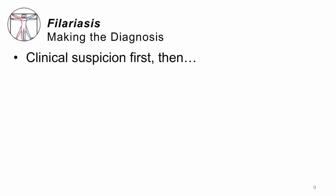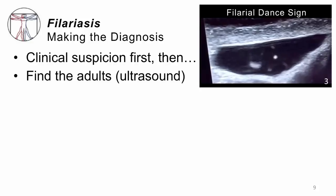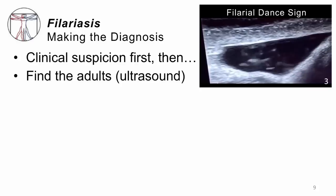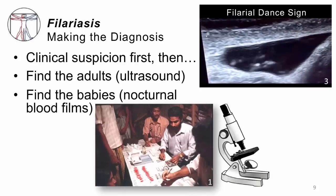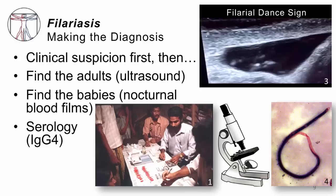How do you make a diagnosis? First, have clinical suspicion. If your patient has lymphedema, chyluria, or pulmonary eosinophilia, and they've been exposed to parts of the world where this infection happens, think about it and then confirm your suspicion. Look for the adults — on scrotal ultrasound you can see the adults cruising in the scrotum. They are dancing; this is called the filarial dance sign, and it is pathognomonic for the infection. You can also look for the babies by doing a nocturnal blood film — the same kind of blood film done for malaria, but at nighttime when microfilariae are most likely to be in the bloodstream. In the United States, we also have the luxury of serology, in particular IgG4, which in the proper clinical context is very specific for filariasis.